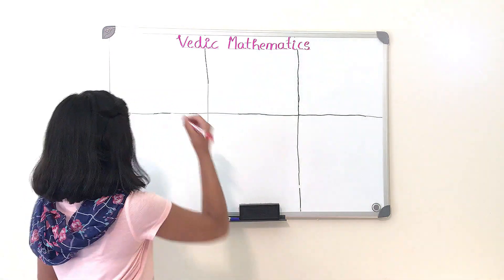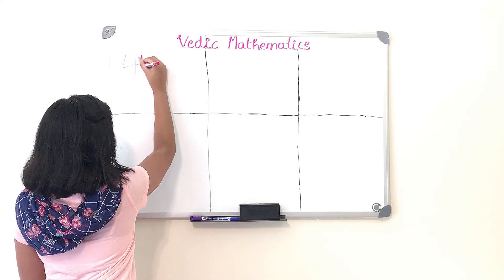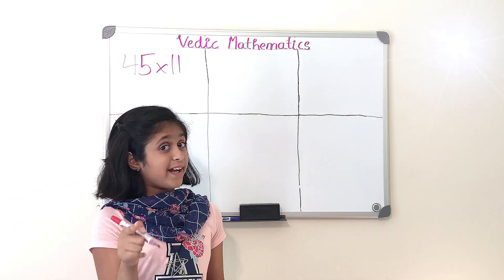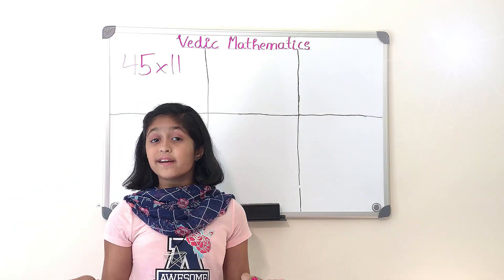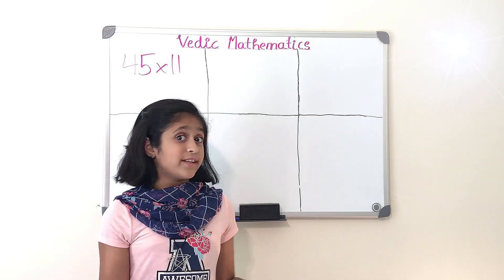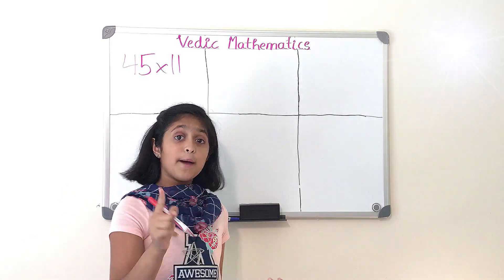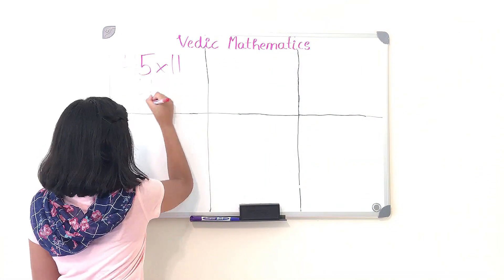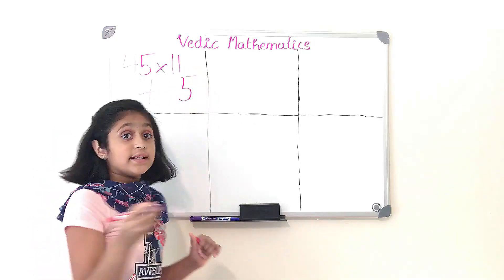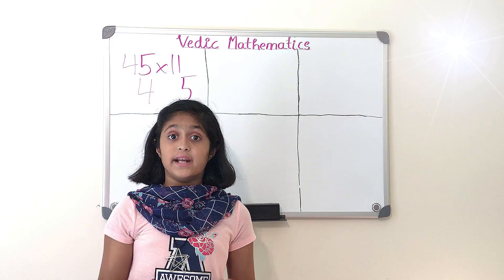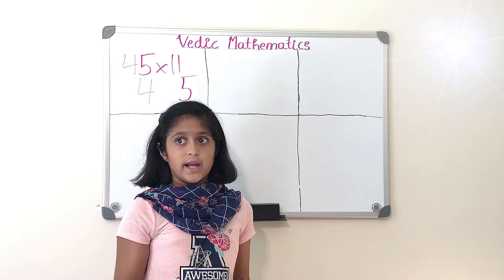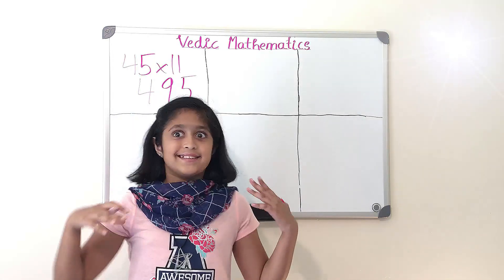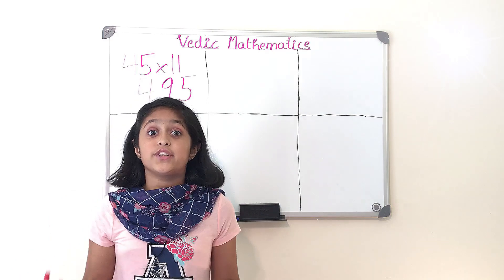So our first one is gonna be 45 times 11. How would you guys do this? Well don't bring out your calculators because we are gonna use Vedic mathematics and it's only gonna take about 5 to 10 seconds. So step 1 is we're going to separate both 4 and 5, and step 2 is we're going to add 5 plus 4 and that equals 9, so that digit goes in the middle and ta-da this is our answer 495. Wasn't that so simple?